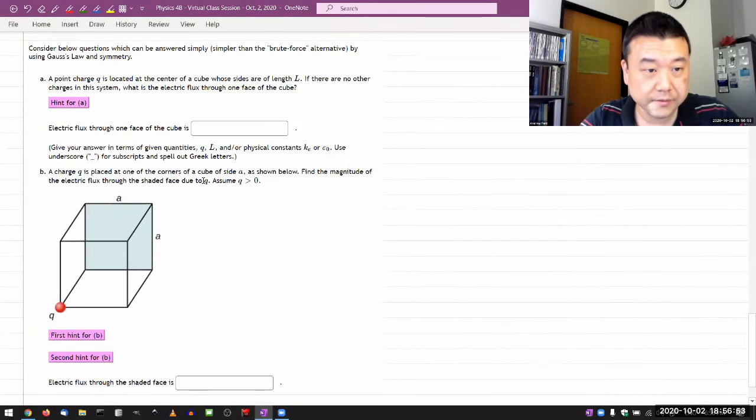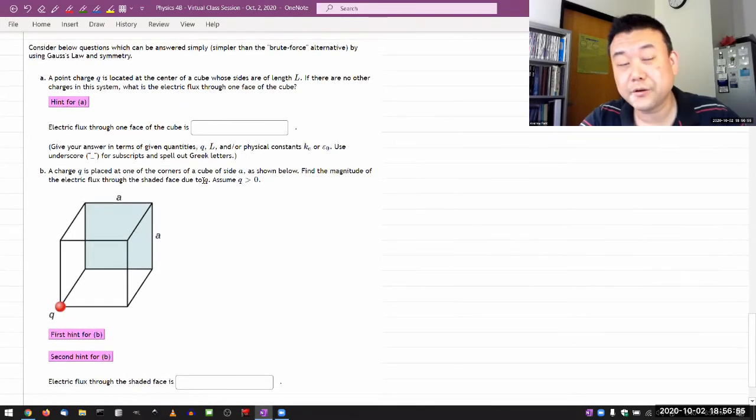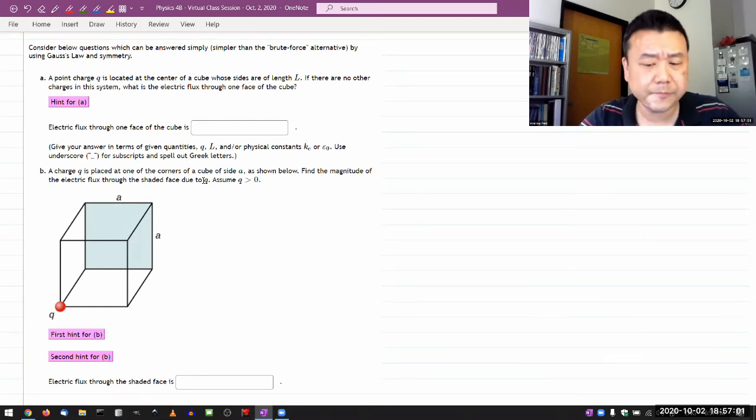So that's the question here. It says consider below questions which can be answered simply by using Gauss's law and symmetry. And using symmetry can be difficult at times. Difficult questions are ones where you have to exercise creativity, where you are not just following a mechanical procedure. And symmetry-based arguments, unless you happen to have them memorized, in which case it can be mechanical.